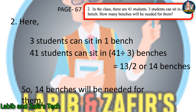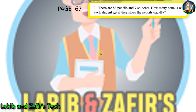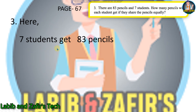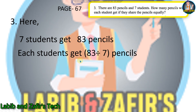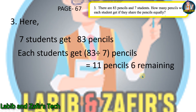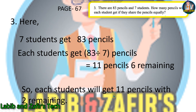Now our third word problem, also from page 67: there are 83 pencils and 7 students — how many pencils will each student get if they share equally? Seven students get 83 pencils, so each student gets 83 divided by 7 pencils. Dividing gives 11 with remainder 6, so each student gets 11 pencils with 6 remaining. Sorry for any mistake in the working.